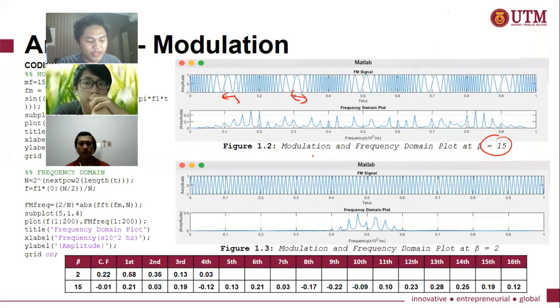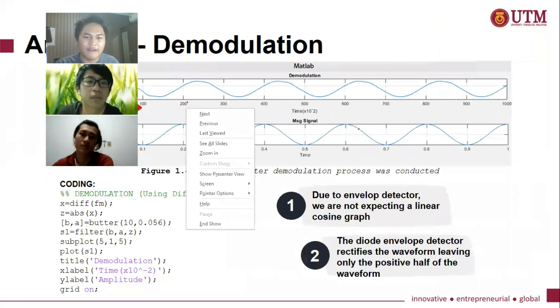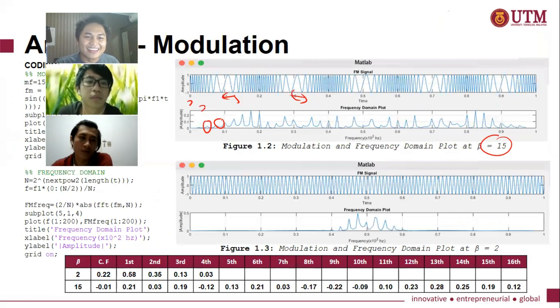From the frequency domain plot, we can see there are 33 peaks. So including the one carrier frequency band, there are 16 sideband also. This is based on the Bessel level.